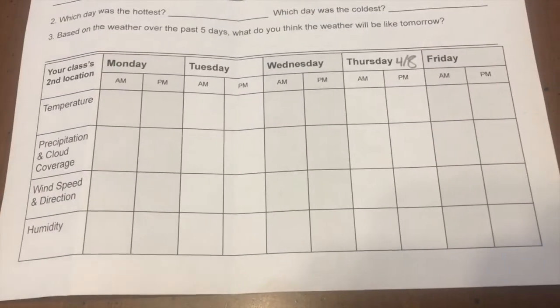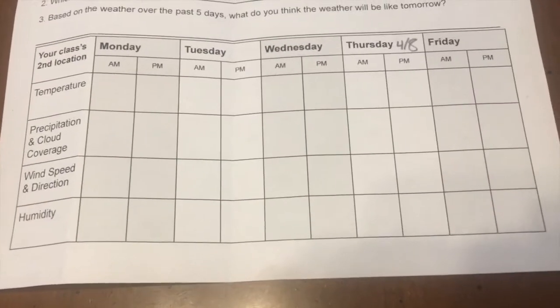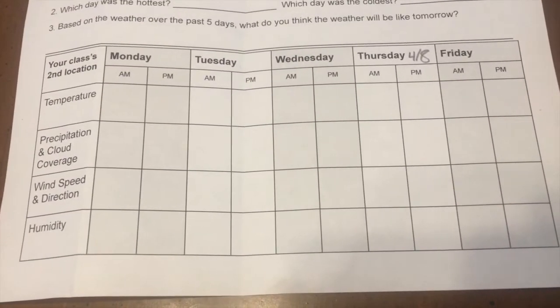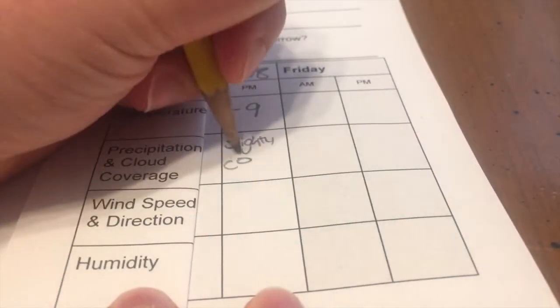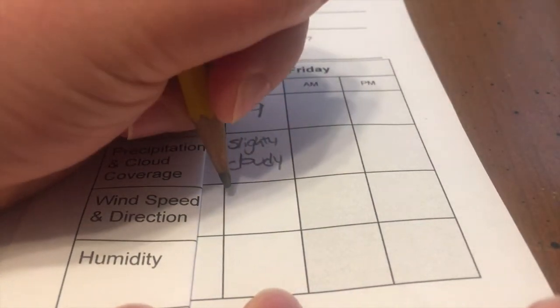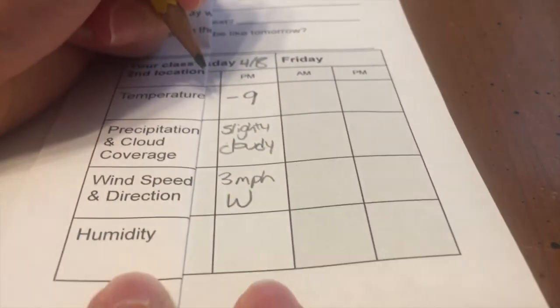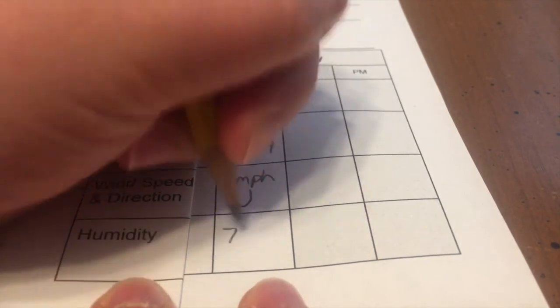Follow the same process for filling out the table for your class's second location. My class is recording the weather from Barrow, Alaska. So today is Thursday, April 8th. I'm just going to fold the paper quickly so it's a little bit easier for you to see. The temperature in Barrow, Alaska today is negative nine degrees. It is slightly cloudy, the wind speed is three miles per hour heading west, and the humidity is 76 percent.